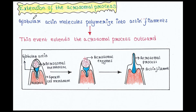Next is the extension of the acrosomal process. Globular actin molecules polymerize into actin filaments, and this extends the acrosomal process outward. It ultimately helps to fuse with the egg plasma membrane.